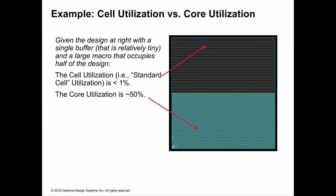In this example, you see how cell utilization versus core utilization is calculated. If you look at the cell utilization, which only looks at standard cells, the utilization is 1%. If you look at the core utilization, which averages both the macro utilization as well as the standard cell utilization, that utilization number is 50%.